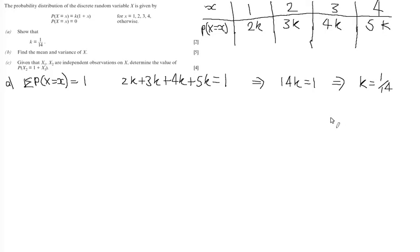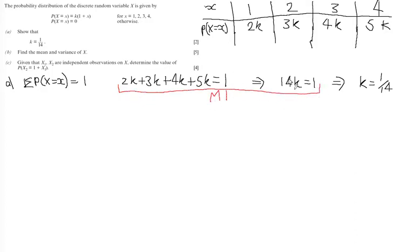For the marks on this question, you get a method mark for correctly indicating convincing working leading up to the fact that k = 1/14, and an accuracy mark for k = 1/14.